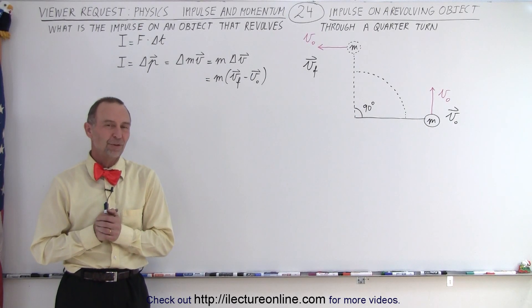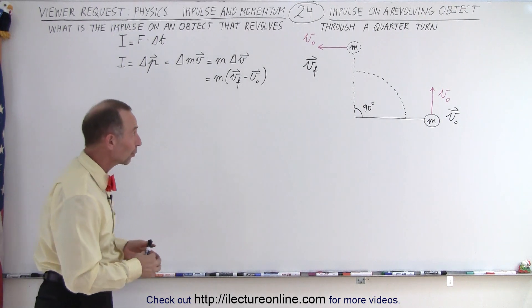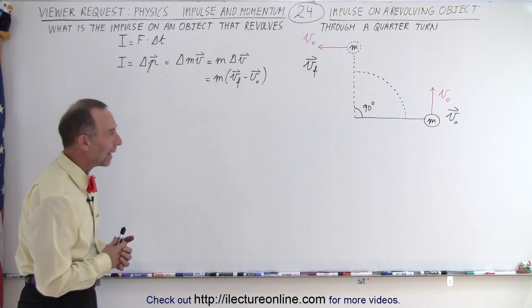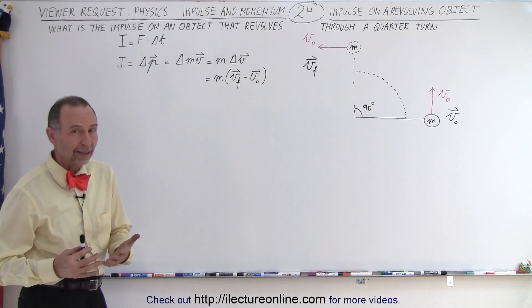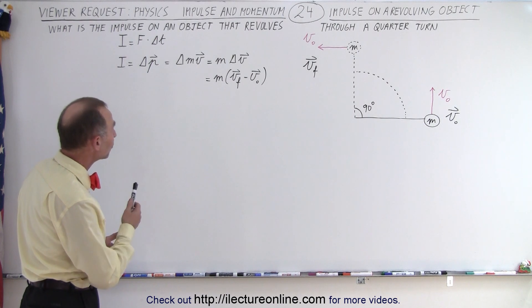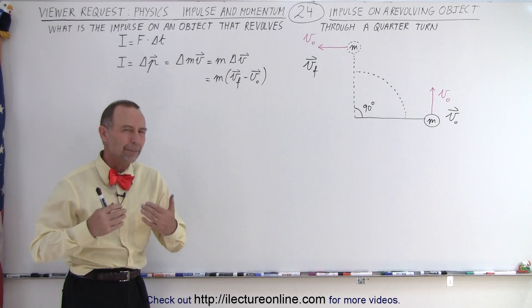Welcome to our lecture online. So here's another question from one of our viewers. We have an object with a certain amount of mass which is revolving around a circular path at a velocity v sub nought, that's the magnitude of the velocity, and we want to know what is the impulse on the object that revolves through a quarter turn.